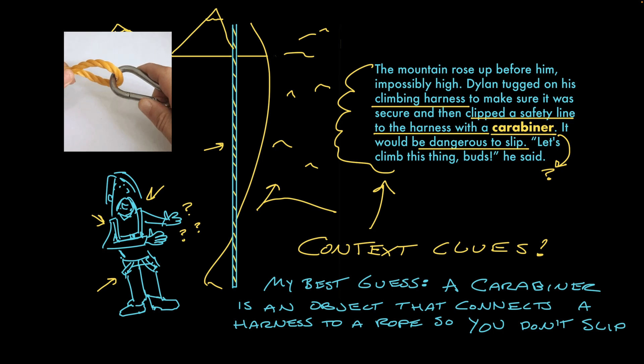The point of using context clues to understand words isn't to guess your way past unfamiliar words forever. It's to create a basis of understanding so you can get through the sentence and understand the meaning of what you're reading. You can always look up the word later if you're curious. It's not cheating to use a dictionary. And you should be curious.